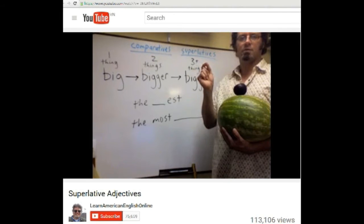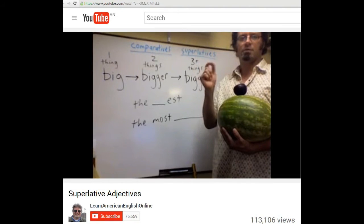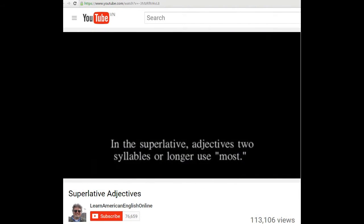Quả nho là quả nhỏ nhất. Trong dạng so sánh nhất, tính từ của hai âm tiết hay nhiều hơn hai âm tiết sử dụng most.